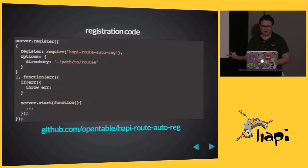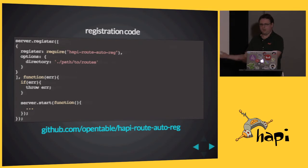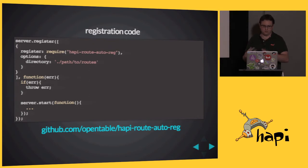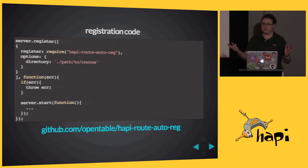The registration code for registering a plugin: you call server.register, you give it a list of plugins. Each plugin has its own little options object, and then at the end you get a nice callback that says, if everything's good, start the server.